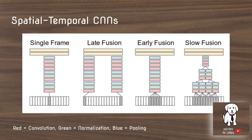This is one of the key ideas in the paper: the spatial temporal CNN. What they're going to try to do is take advantage of CNNs — convolutional neural networks — across different timescales. The first model is a single frame model, where they just use a CNN to extract image features from a single frame in the video.